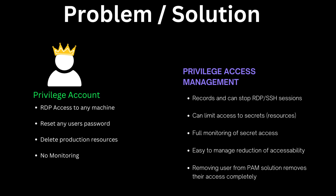Privilege access management systems allow you to do things like recording RDP and SSH sessions. They can actually limit access to the secrets, passwords, and resources in the organization so that you're following least privilege. We have full monitoring and recording of which secrets and passwords have been accessed. It's easier to manage because you have a holistic system and a single platform for privileged users. Removing them from the PAM solution removes access to their account completely, so you don't have to worry about off-boarding these users.